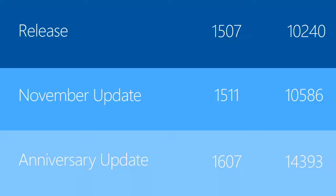There are two numbers tied to every release of Windows. The first is the version number, and the second is the OS build number. Different parts of the Windows documentation talk about these two numbers independently — sometimes they'll say you need version 1511, other times they'll mention 14393. Higher number is the OS build, lower number is the version number. If you want to check which version you're on, just use About My PC.